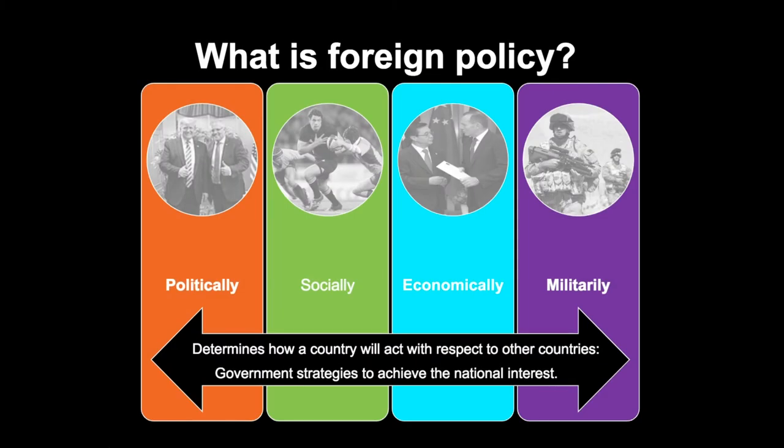Hi there, I'm Diane Coleman and this short video is about how foreign policy is formulated and implemented in Australia. Firstly, let's begin by figuring out what foreign policy is. Foreign policy is the instrument by which the government seeks to further Australia's goals and ambitions, the benefits to Australia's national interest, through interaction with our neighbours.